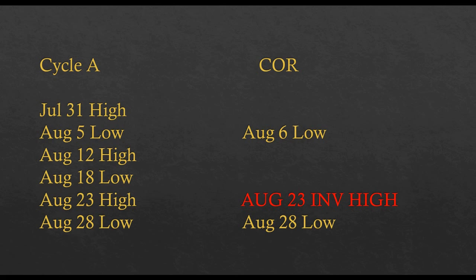Inversions are their nature — they're knowable in advance. They're nature's way of keeping the two cycles in alignment. The power and the fusion is taking cycle A and the COR and combining them. I have one system which is cycle A and another which is the COR, and they both have to say the same thing — that gives you balances and checks. You don't have that in stochastics or other technical analysis tools. This is all mathematical cycle logic.